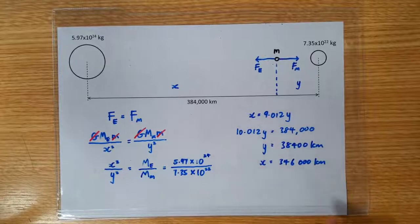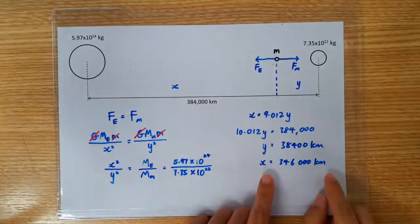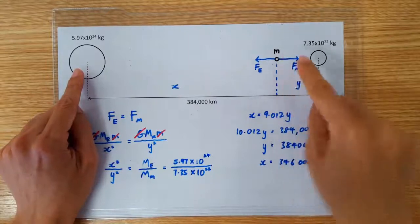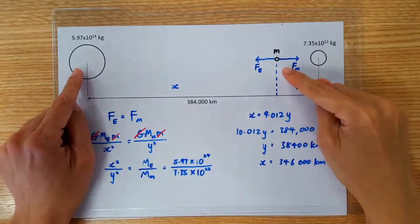So, it turns out the null point can be found at about 9 tenths of the distance to the Moon, at about 346,000 km.